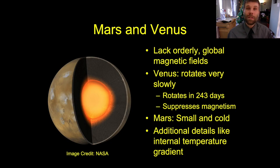So Mars and Venus, two of the four terrestrial planets, lack ordered global magnetic fields. In Venus, this is due in large part to its very slow rotation. Venus rotates about once every 243 days. It actually takes longer to rotate on its axis than it takes to go around the Sun. And that lack of rotation means that Venus is not able to develop a global magnetic field that suppresses Venus's magnetism. There are some other factors that are important in Venus as well. For example, its temperature gradient is relatively weak, which means it's hard to set up convection. But the lack of rotation is a real killer for Venus.